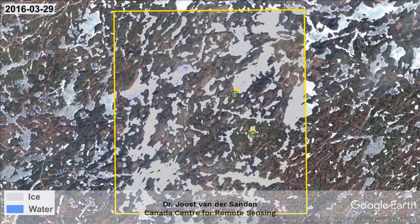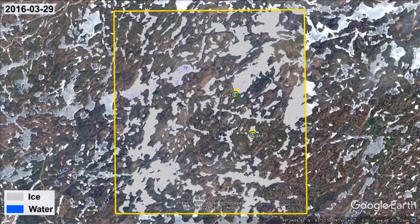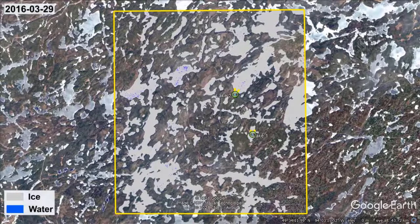Within the confines of the yellow box, this map shows the break-up situation on the 29th of March. As you can see in the legend, ice cover is displayed in grey and water in blue. Since spring has only just arrived, it is not surprising that the ice cover of each lake appears to be largely intact.